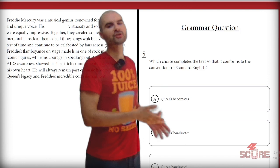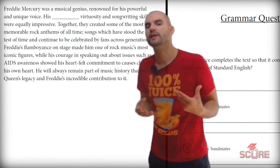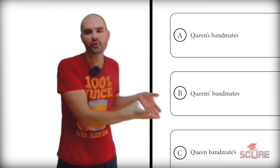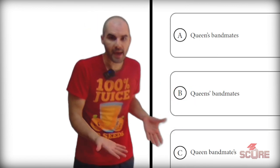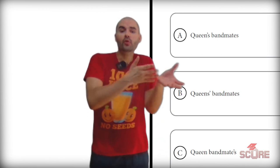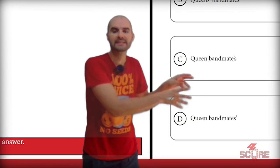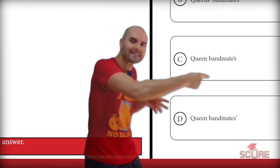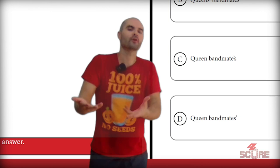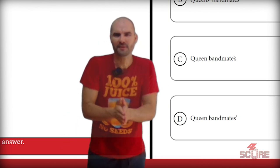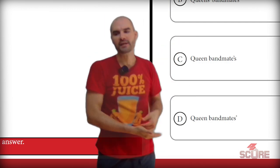Fifth question deals with apostrophe-S in plural and singular forms. The blank says 'his blank virtuosity and songwriting skills were equally impressive,' referring to Freddie Mercury and the band Queen. I can instantly rule out 'Queens' with an S because that's not the name of the band. Queen doesn't need an apostrophe-S here since it's describing the bandmates. That leaves C — 'bandmate's' — or D — 'bandmates'' with the apostrophe after. Since there are multiple bandmates, the plural possessive applies. The answer is D: Queen bandmates' apostrophe.